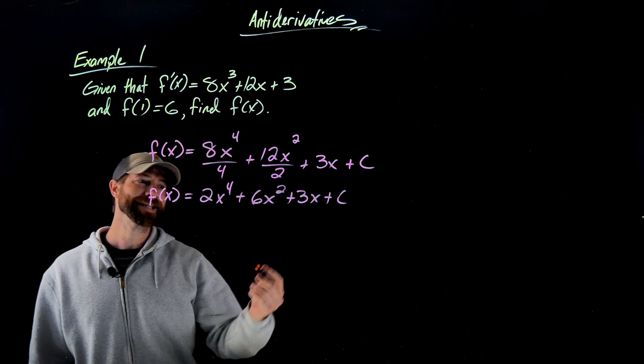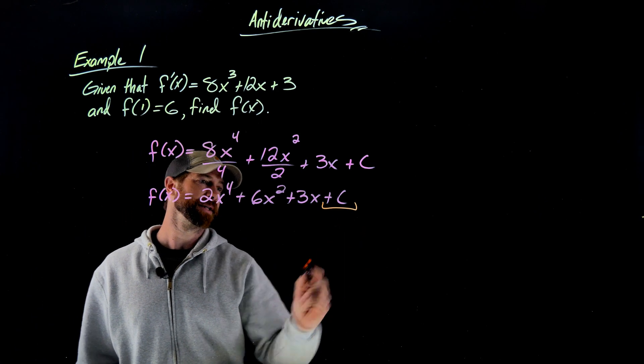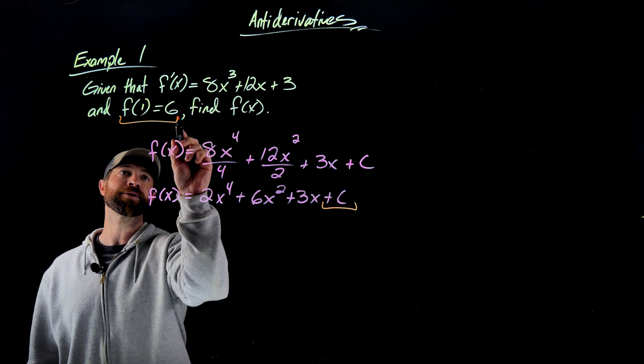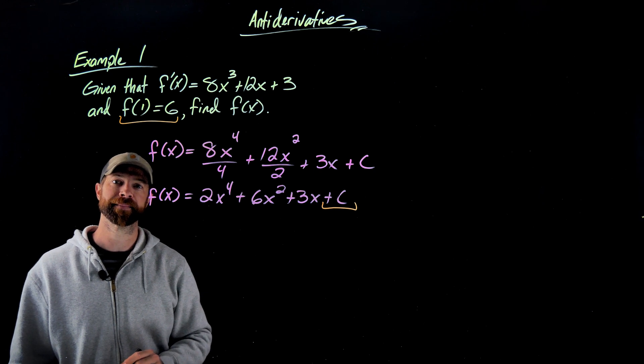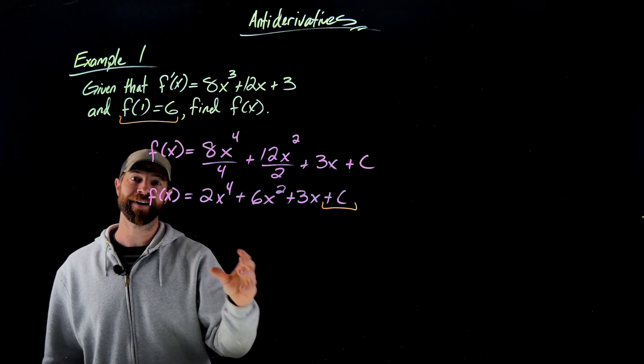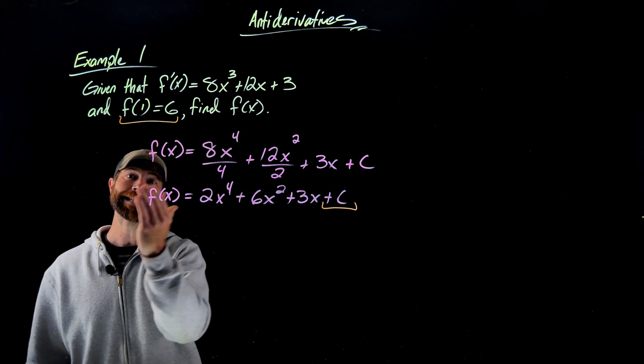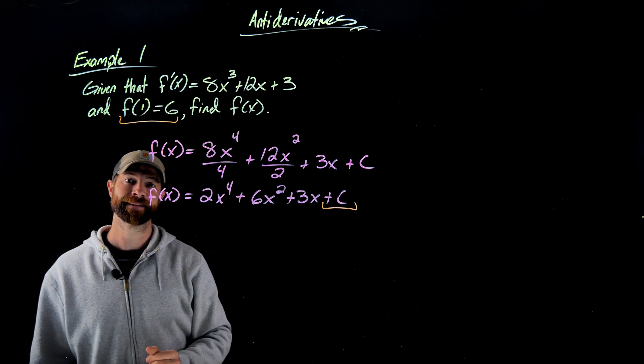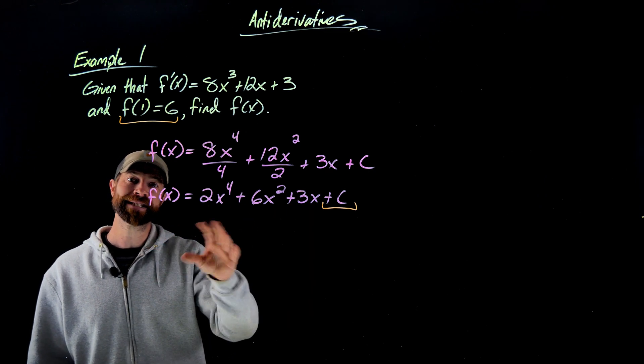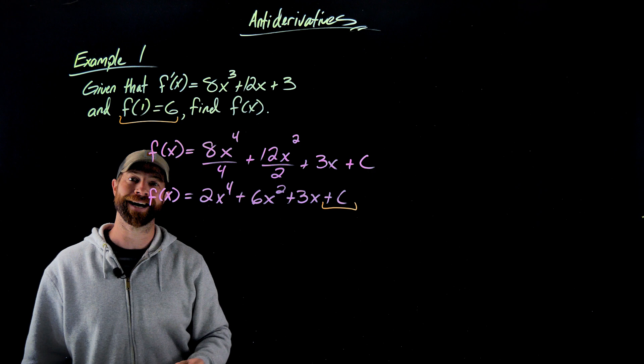And now the only difference between this and previous problems is we're going to replace this c with an actual value. And to do that, we're going to use this information right here. What this means is that when I plug in a 1 for my x value, this f of x function needs to output a 6. So all I'm simply going to do is plug in a 1 here, set it equal to 6, and that will set up a simple equation to find c.